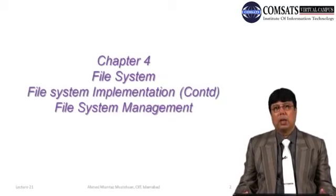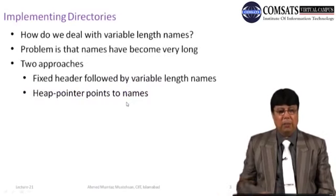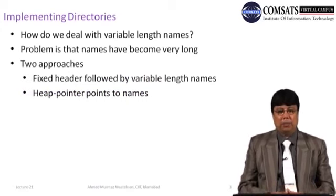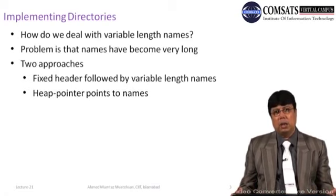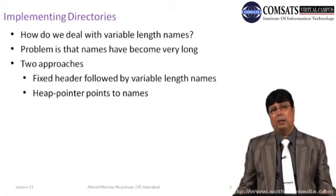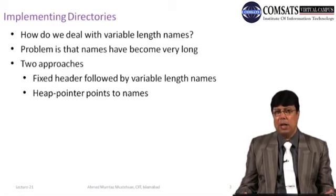Bismillahirrahmanirrahim. Dear students, I am Ahmad Mumtaz Mustaysan, your teacher for CSC 322 Operating System Concepts. We were discussing the file management system of the operating system and in the last lecture we were talking about file system implementation. We start with implementing directories and we said that we are required to deal with variable-length names. DOS allows only 8-character file or directory names whereas other operating systems allow up to 31 characters, with a theoretical limit of 256 characters.